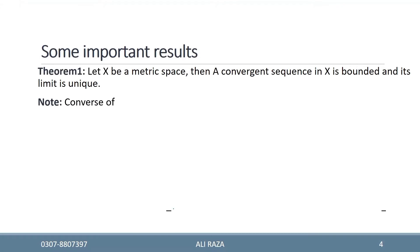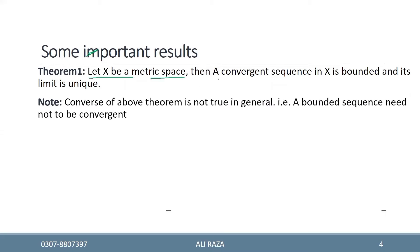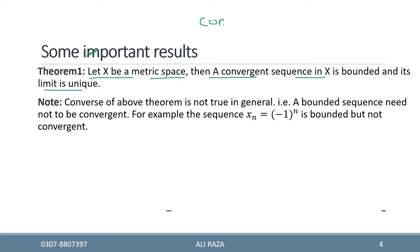Next، ہمارے پاس کچھ results ہیں۔ پہلا result: let x be a metric space. Then a convergent sequence in x is bounded and its limit is unique۔ یعنی convergency of sequence سے دو نتائج اخذ ہوتے ہیں: وہ sequence bounded بھی ہوتا ہے اور اس کی limit بھی unique ہوتی ہے۔